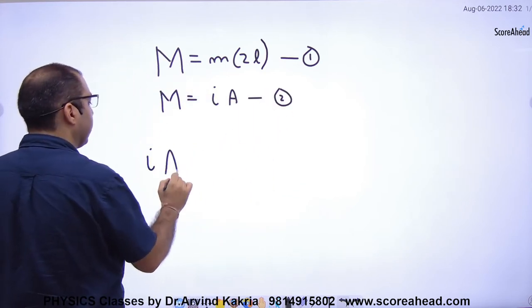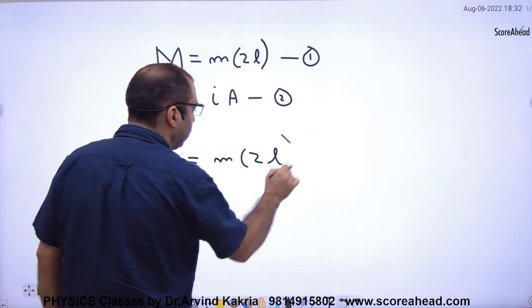Now let me equate both. Current into area is equal to small m into 2L. Right?